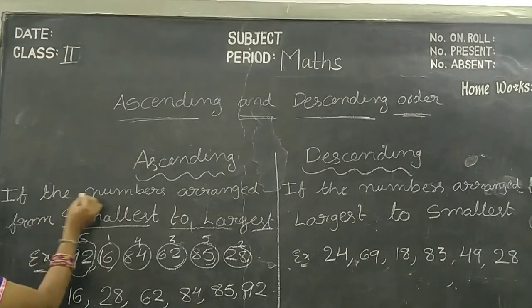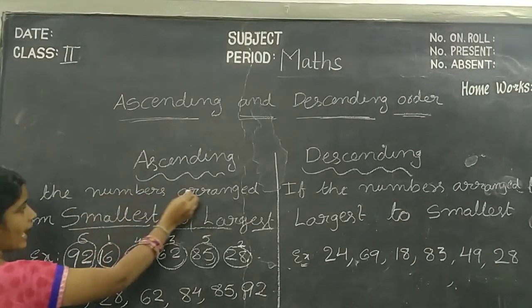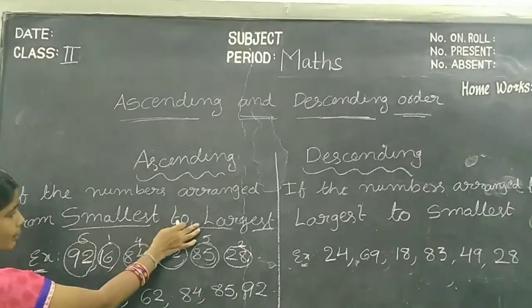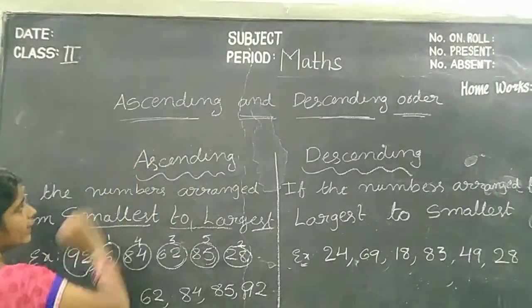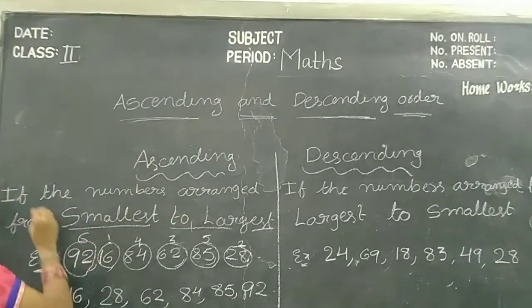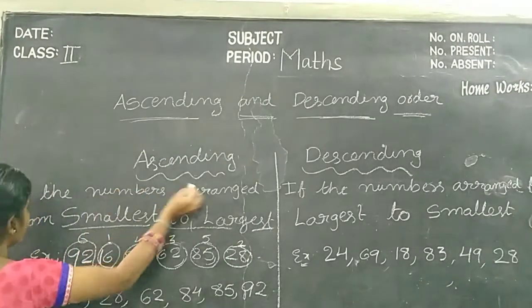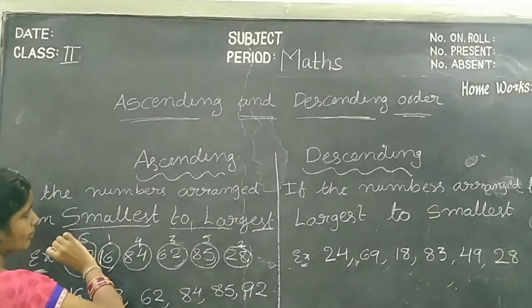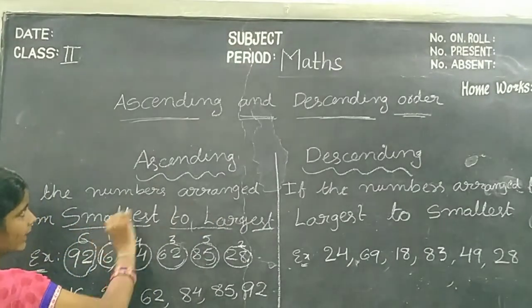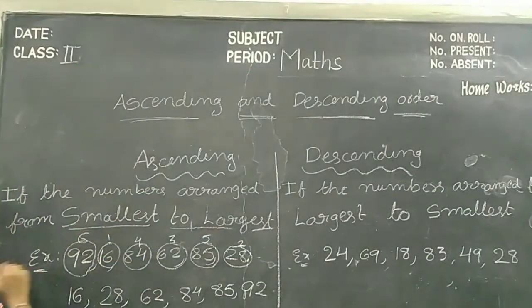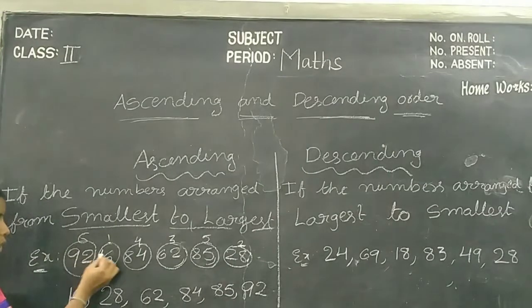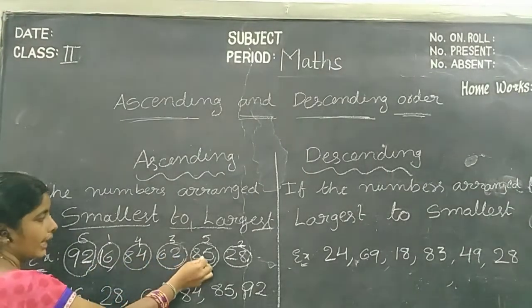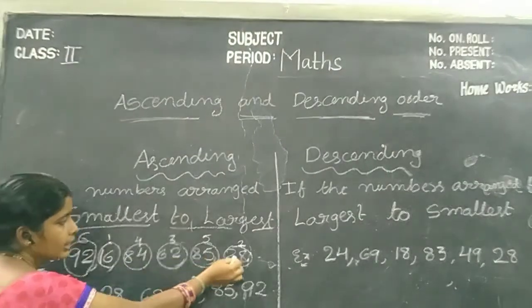Once again — if the numbers are arranged from smallest to largest, it is called Ascending Order. See the example: 92, 16, 84, 62, 85, 28.